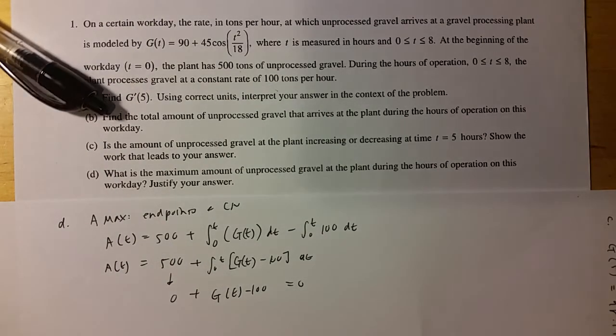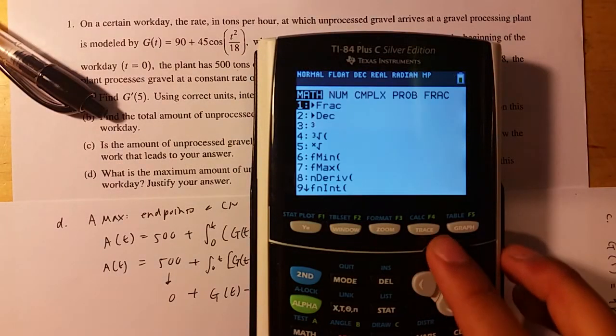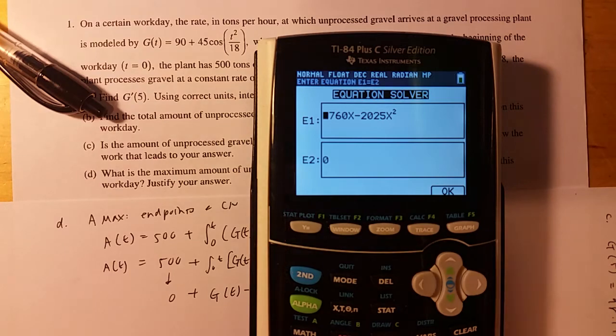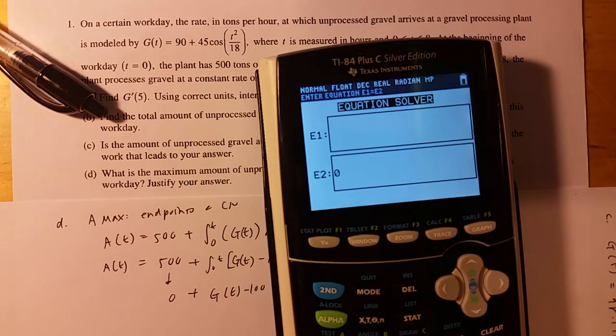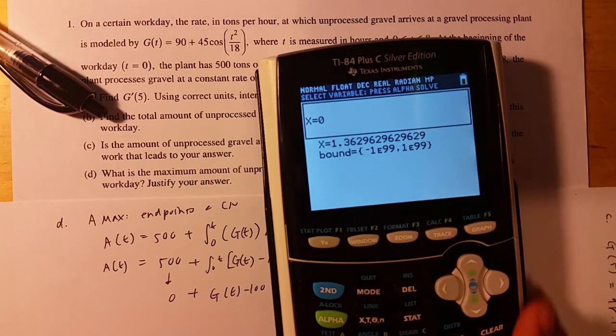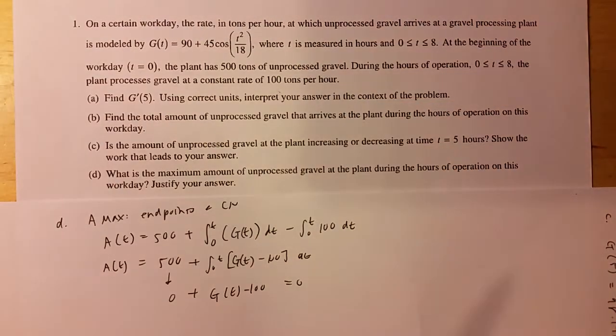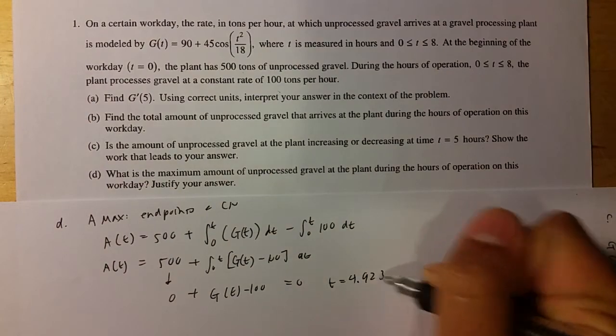And you can put this into your calculator again by doing math and then solve, which is just press up and then enter. And then just enter your two equations, which I don't know what you do here, but let's just say X or something. And then you can find out what the critical numbers are. But basically, if you put that in, you'll find that T equals 4.923. So that's a critical number.